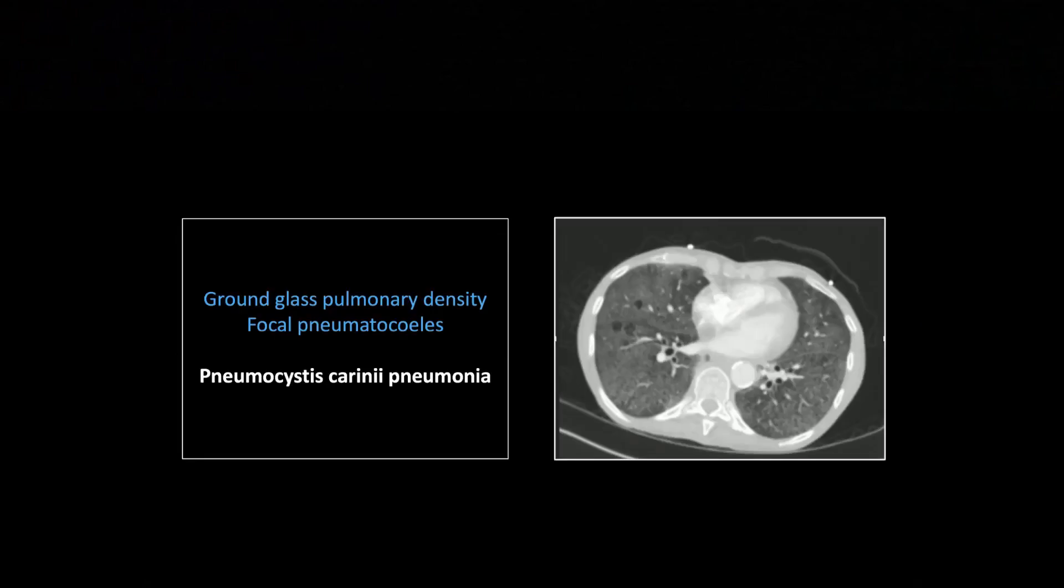This is extreme ground glass. It's everywhere. Beware in radiology, when you have a finding that involves all of a visualized structure, sometimes it can be a real fooler. There's ground glass density through all of the visualized lungs. That could actually fool you into just thinking it's normal if you didn't look closely enough. The one thing that would save you here is that there are these cystic regions. Those pneumatoceles are a classic finding in pneumocystis carinii pneumonia.